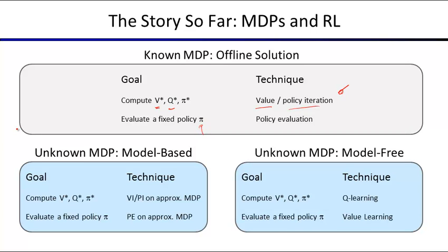When we switch to reinforcement learning, T and R are not known ahead of time. One approach is to collect experience in the MDP, build an approximation of T and R, and then apply the same techniques to the approximate MDP estimated from experienced transitions and rewards.